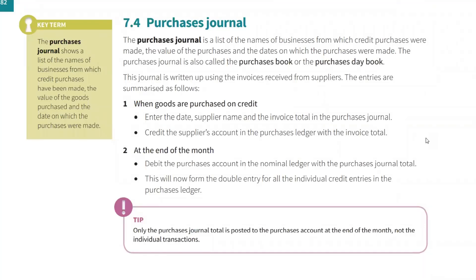Purchase journal: the purchase journal is the list of names of businesses from which credit purchases were made — these are your suppliers, the credit suppliers. When you buy goods on credit, you list them in the purchase journal, just like when you sell goods on credit you list them in the sales journal. The purchase journal is also called the purchase book or purchase day book, and is written up using invoices received from suppliers.